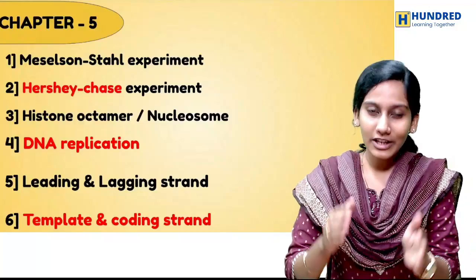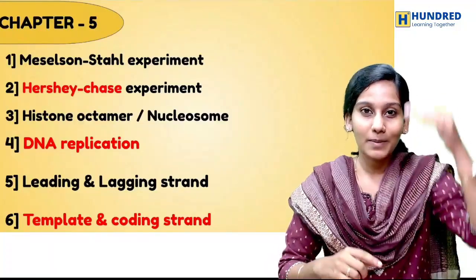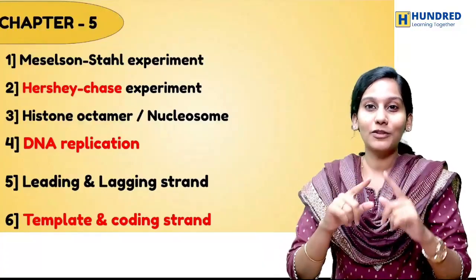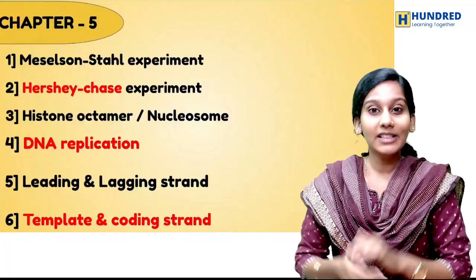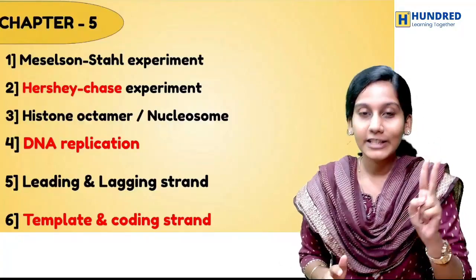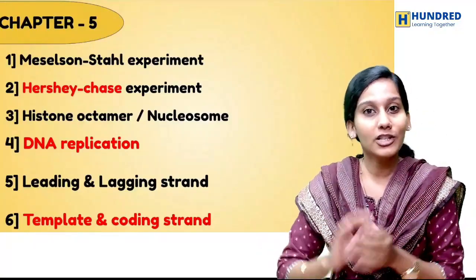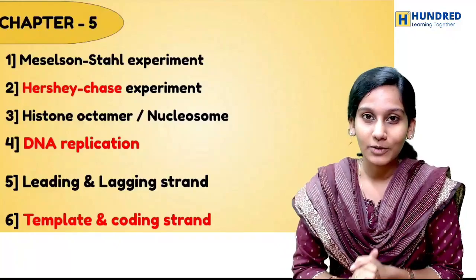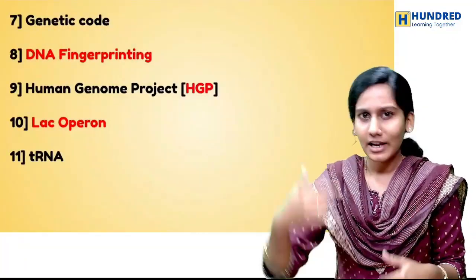For DNA replication, make a list of enzymes and their functions, and draw the replication fork diagram — it will be easier to score 5 marks. The difference between the leading and the lagging strand, and between the template and coding strand, in table form will be easier to score. If the presentation is super good, you will definitely make 3 marks. You will also see all the genetic code and its features.